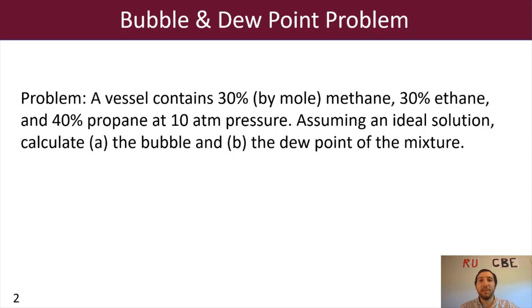So for my sample problem, we have a vessel that contains 30% by mole methane, 30% by mole ethane, and 40% by mole propane at 10 atm of pressure. Assuming an ideal solution, I'd like to calculate the bubble and the dew point temperatures of the mixture.